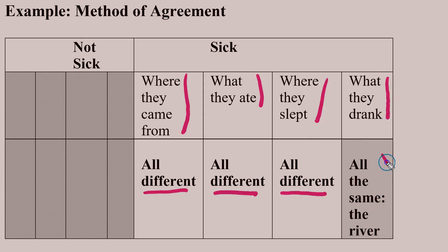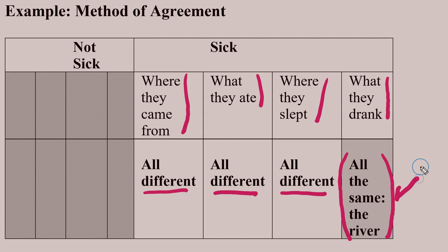they all drank the same thing for dinner, which was the river water. If that's all they have in common, Mill's going to say there's good evidence that that is likely to be the cause of them getting sick.